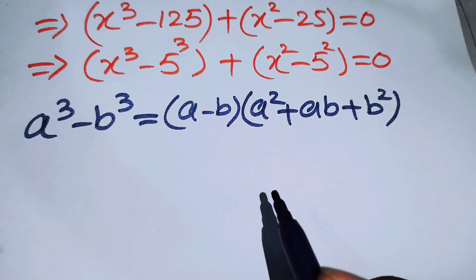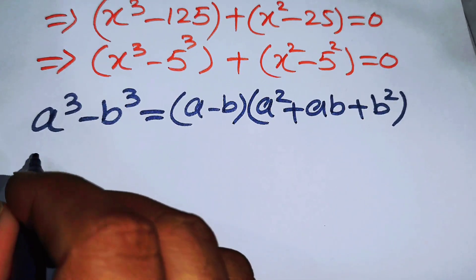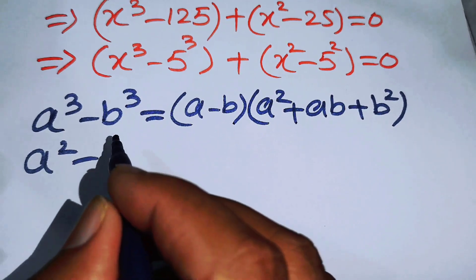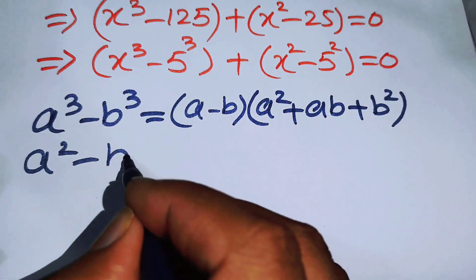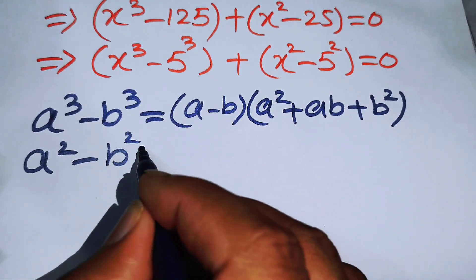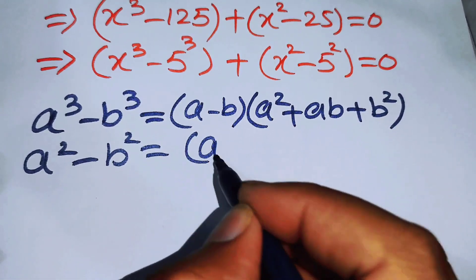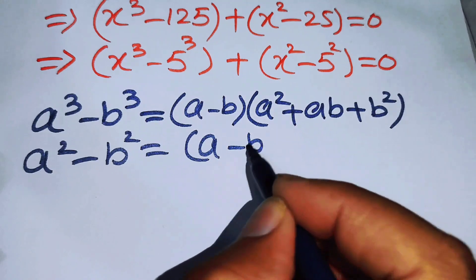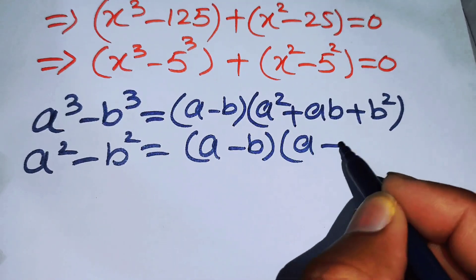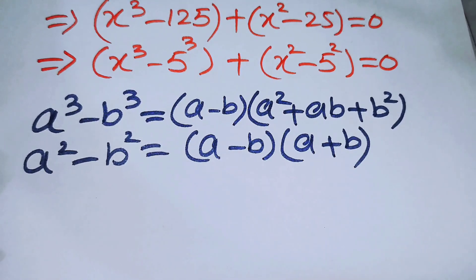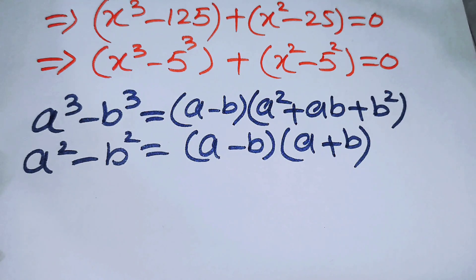The second formula is the difference of squares: a squared minus b squared equals (a minus b)(a plus b).